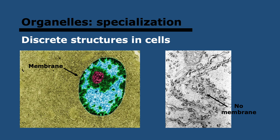Eukaryotes have a lot of organelles, whereas prokaryotes have way less. We looked at some of the organelles in A2.2, which I'll link above. In a lot of cases, organelles are enclosed by a membrane, as you can see here with the nucleus. But in other cases they are not, such as ribosomes, as you can see here — these do not have a membrane.